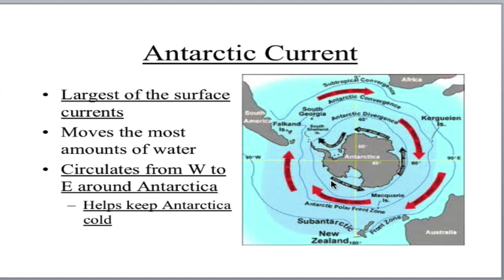Here's the crazy thing though — this current hasn't always been here. We've talked about Pangaea breaking up. Before all the continents broke up, the southern tip of South America and the peninsula that comes off Antarctica were actually connected. When they were connected, the Antarctic Current did not exist — water would go around the other ways — and that actually kept Antarctica relatively warm, with plants and animals living on this huge continent. Once South America and Antarctica separated, the Antarctic Current could begin to form, and that sent Antarctica into the deep freeze.